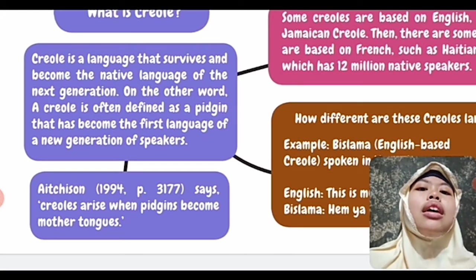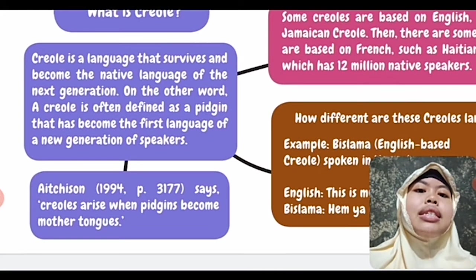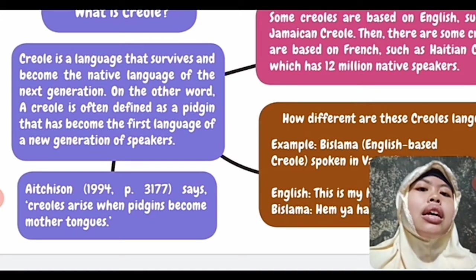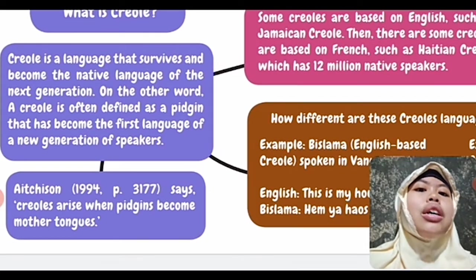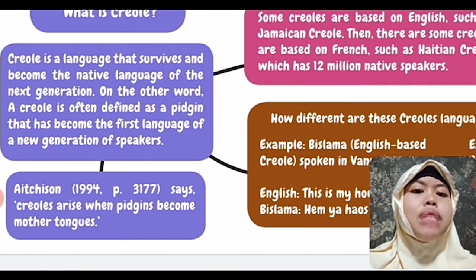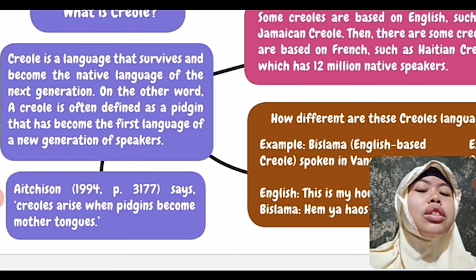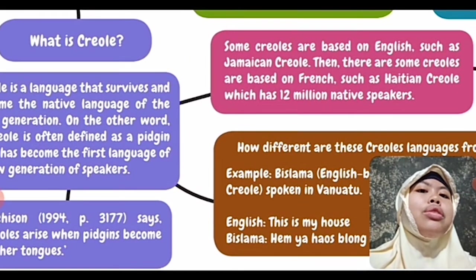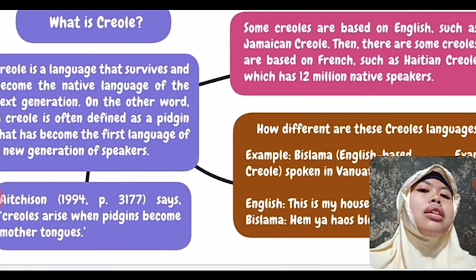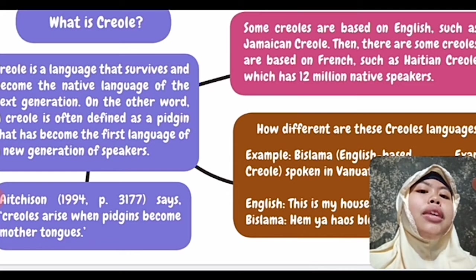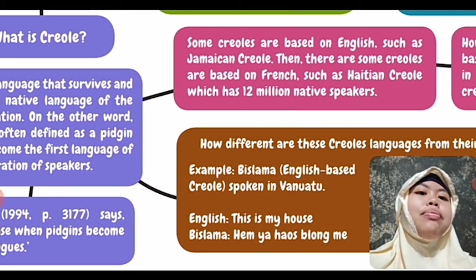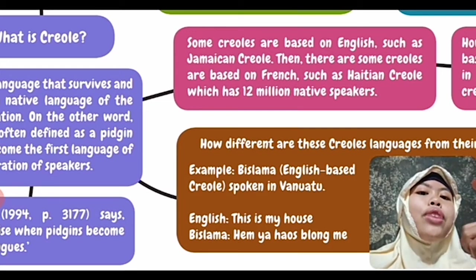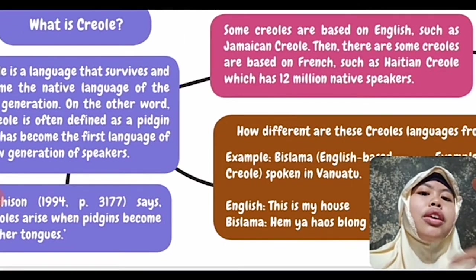Based on Siegel (1994), page 3177, Creoles arise when Pidgins become mother tongue use. So they adopt it as their mother tongue because their parents used it and taught it to them — so they feel that Pidgin is their mother tongue.